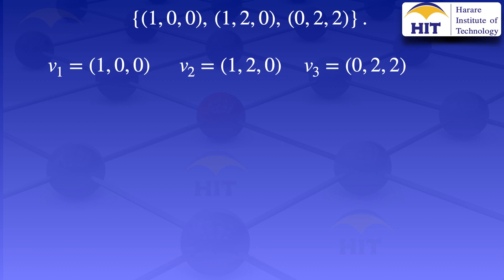What we are going to do is find three vectors U1, U2, U3, where those vectors have a norm of 1 and are pairwise orthogonal. To find these vectors we are going to use the Gram-Schmidt process.